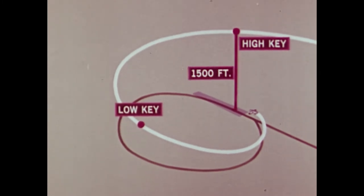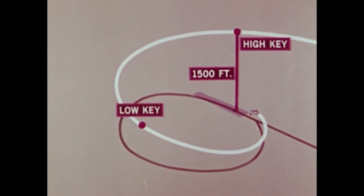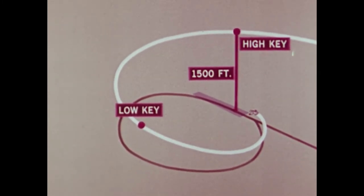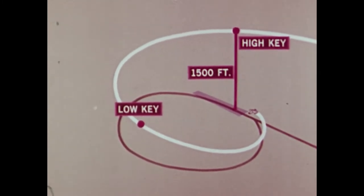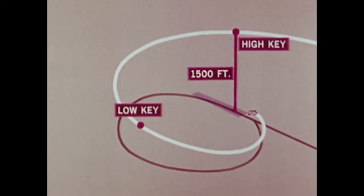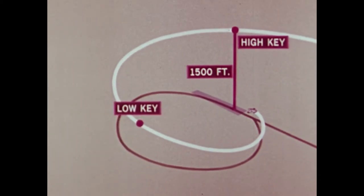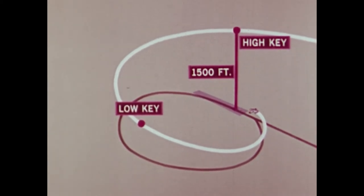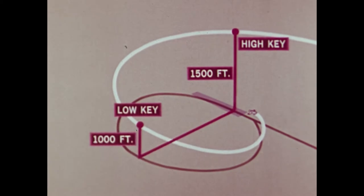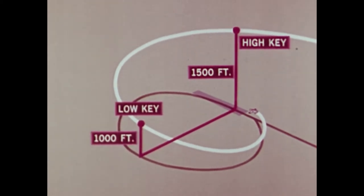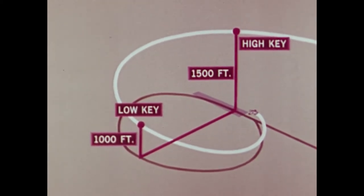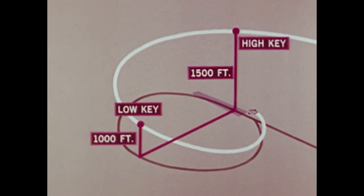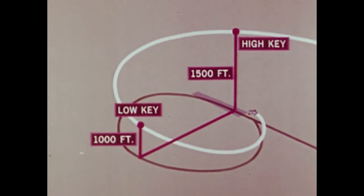High key is 1,500 feet of actual altitude over the point of intended landing, headed into the wind. Low key is at 1,000 feet of altitude, one wingtip distance abeam the point of intended landing, headed downwind.